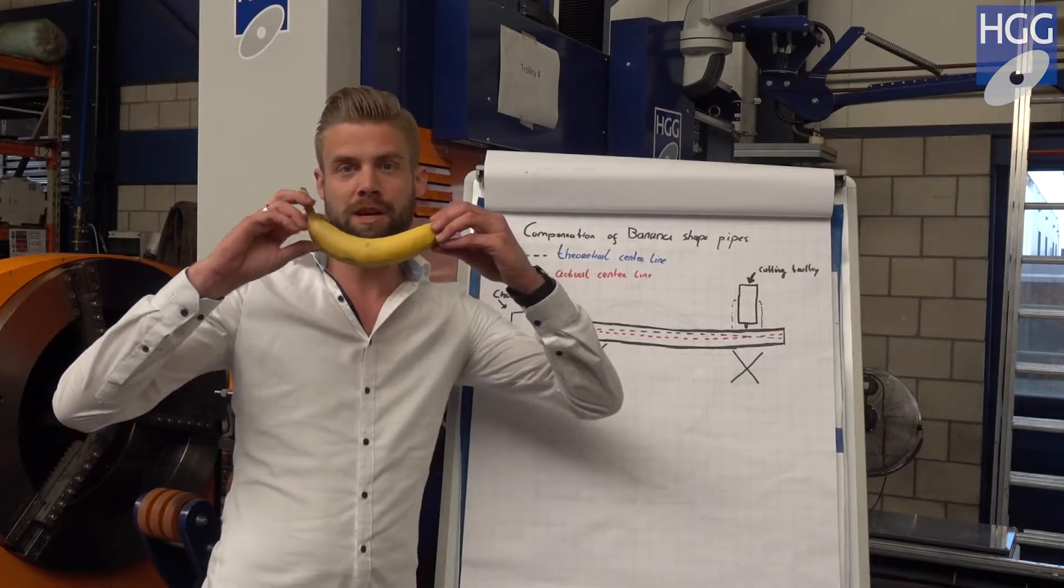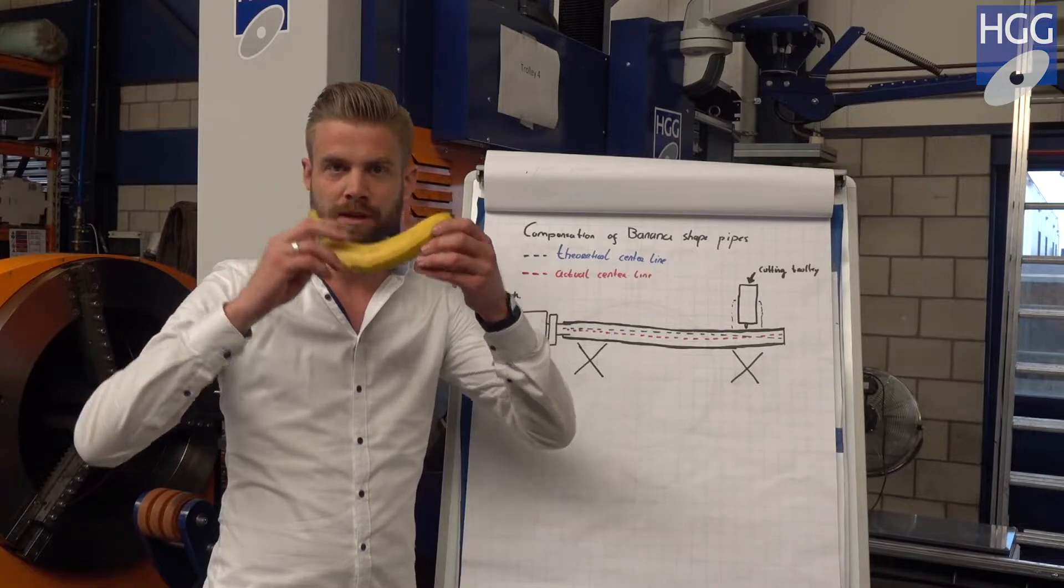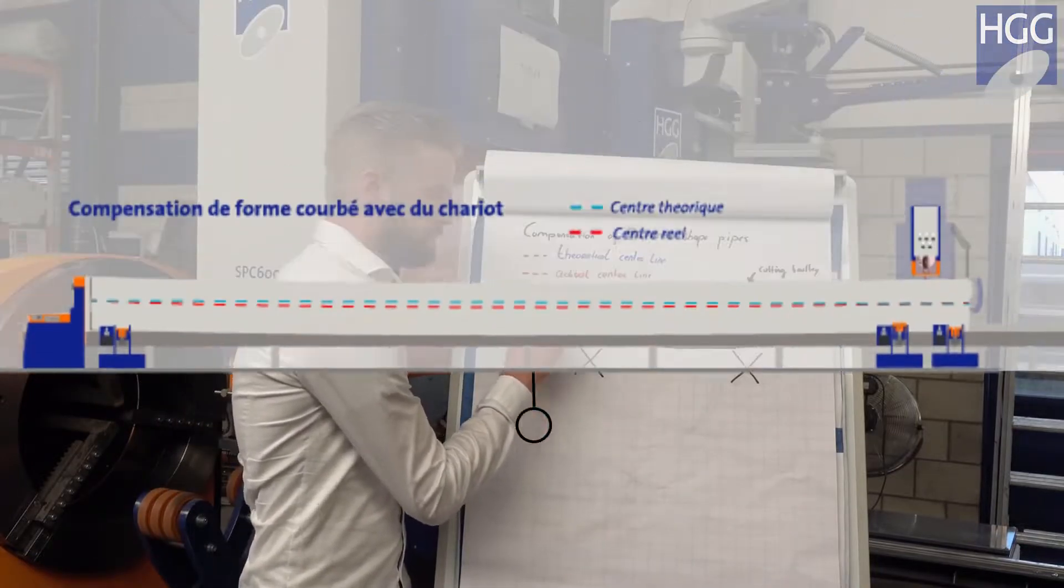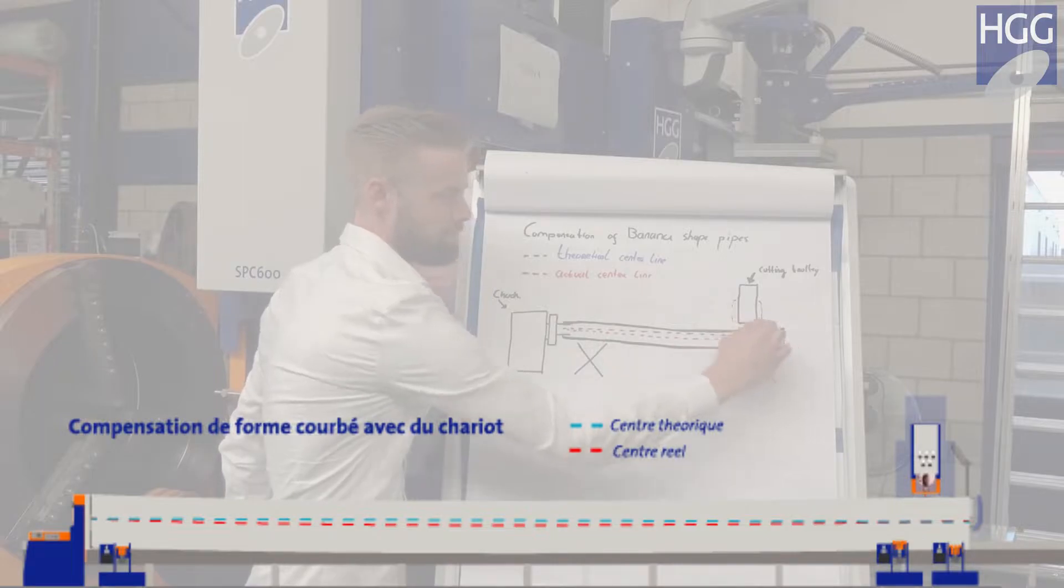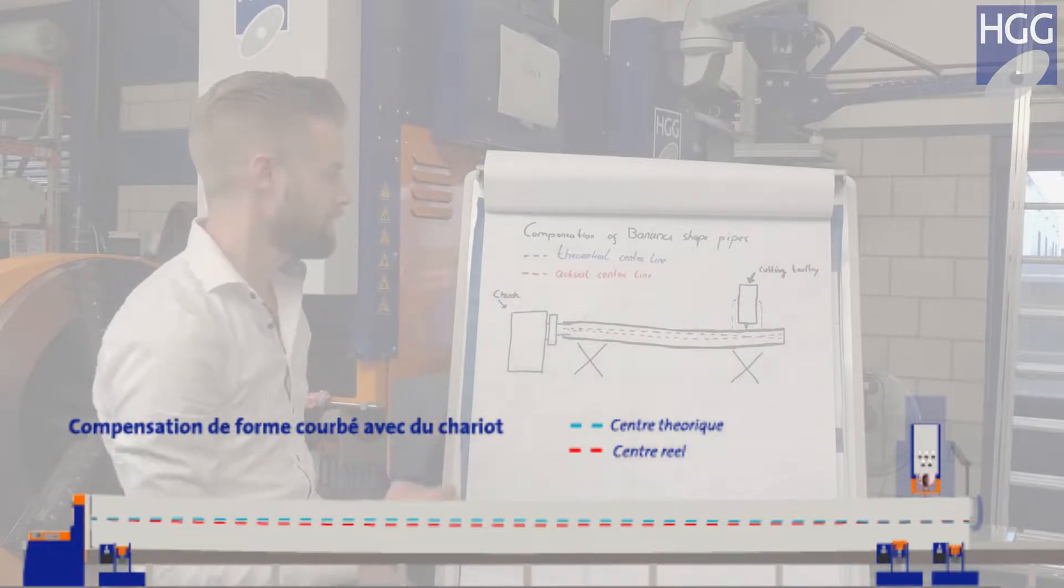When cutting a banana shaped pipe it will rotate like this. So the machine will think that it is processing the blue line, but the actual center line is the red line.